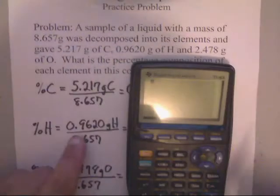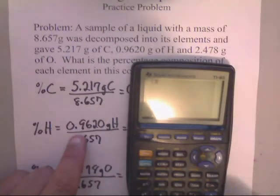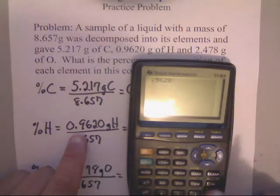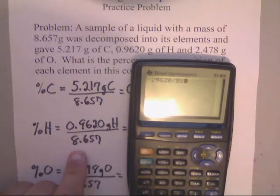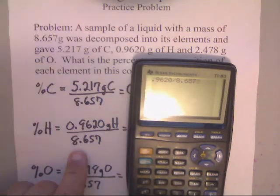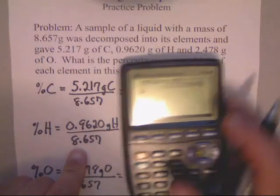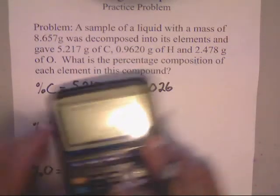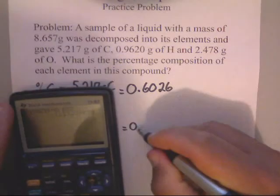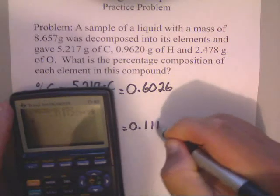Then we'll do the next one. I have 0.9620 divided by 8.657, and I get that—a bunch of ones, four ones in a row. That's pretty nice: 0.1111.